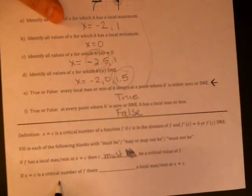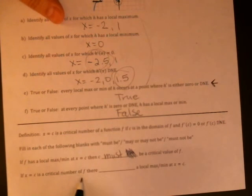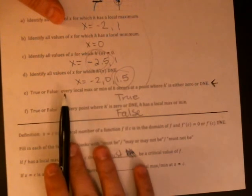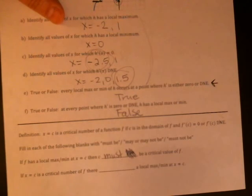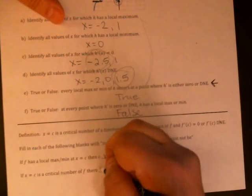If x equals c is a critical number, so the derivative is zero or undefined, then there must, may, or must not be a local max or min at x equals c. Okay so we had critical values that did not end up being maxes or mins but we also had critical values that did, so this is a may or may not.